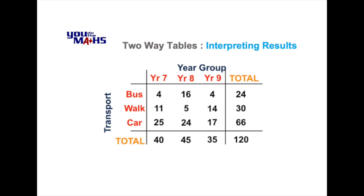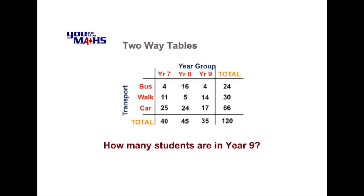Some of the most obvious questions are usually how many students are in a particular year group or how many are using a particular mode of transport. The first question is how many students are in Year 9, and all we need to do is look at the column represented by Year 9, scan down that column, and the total value is 35.